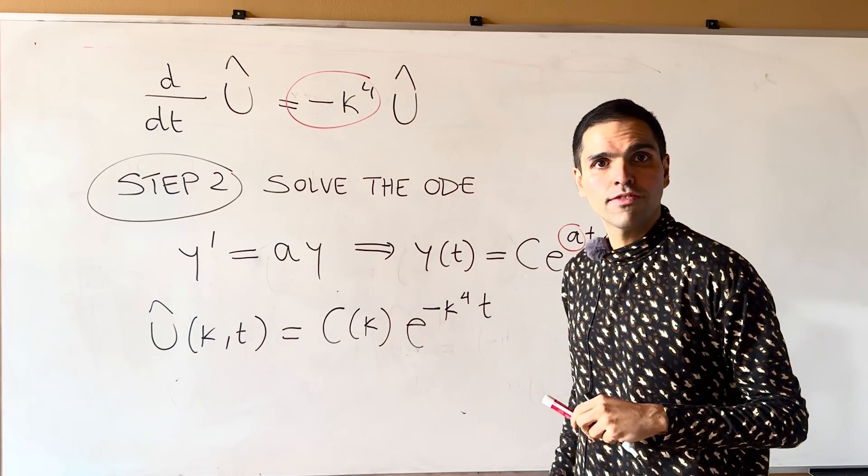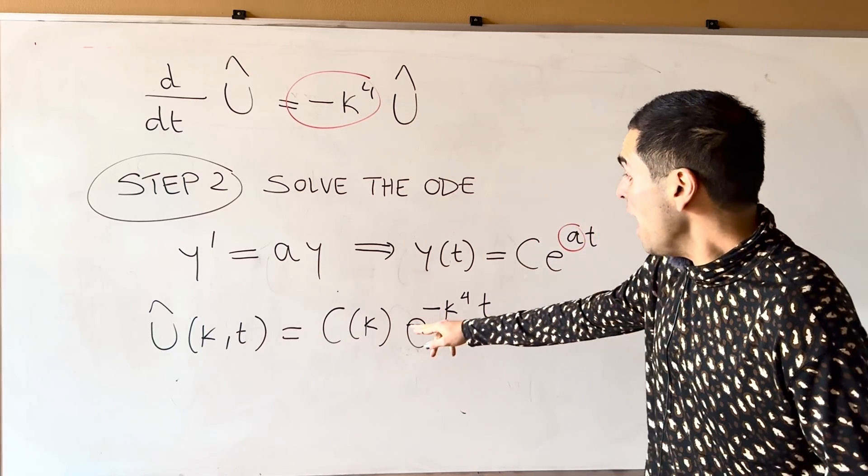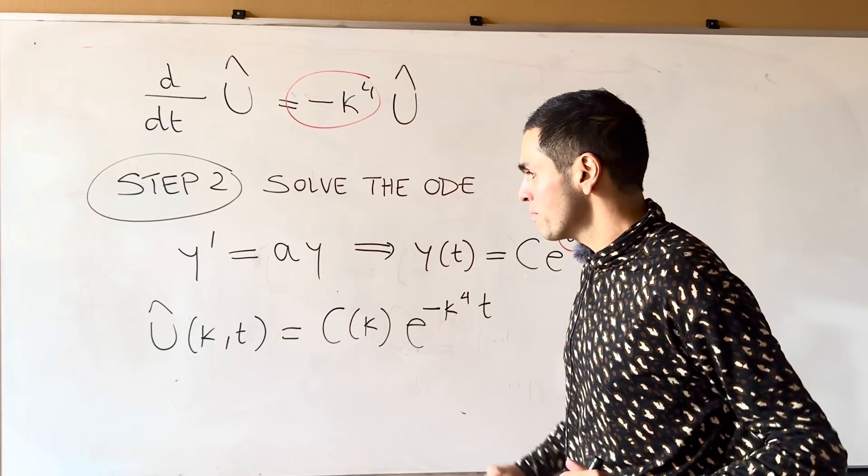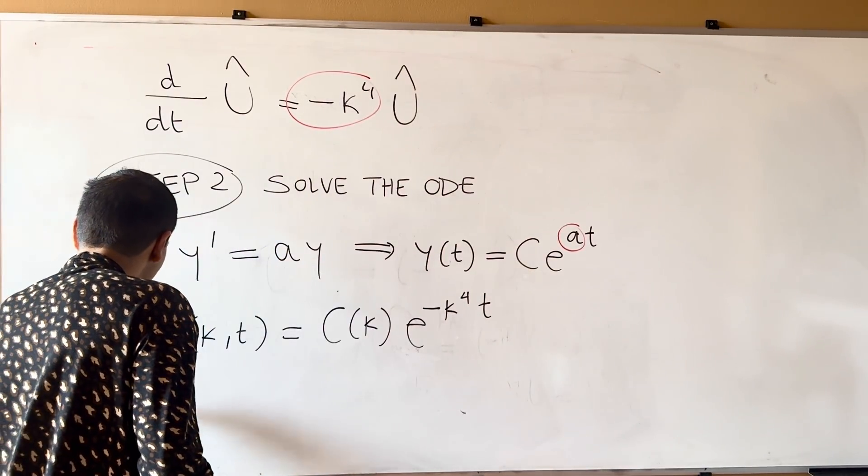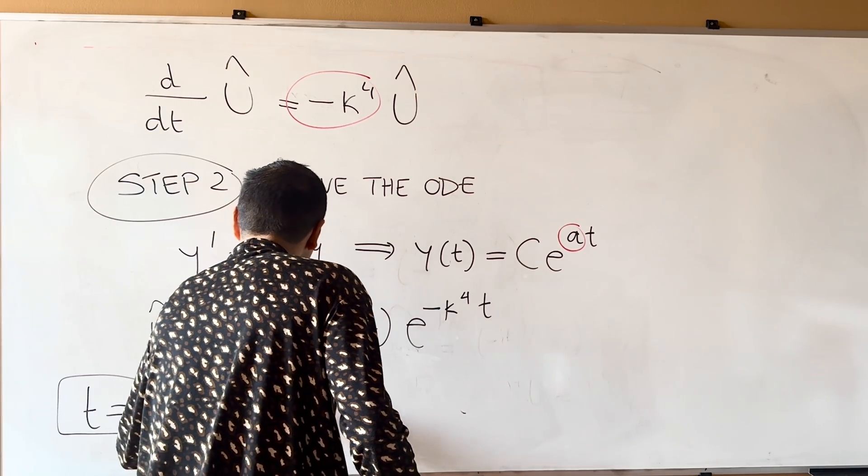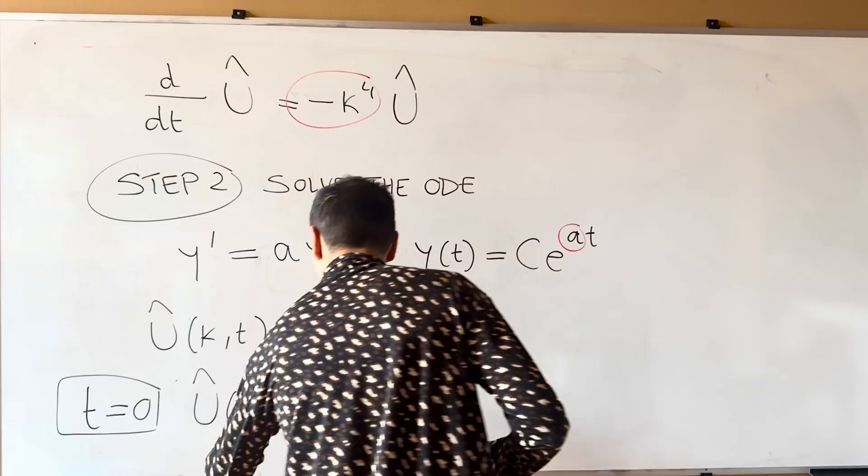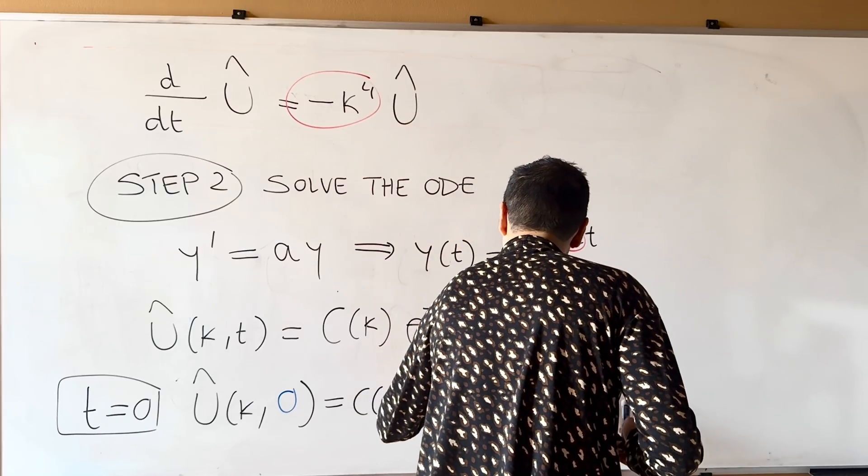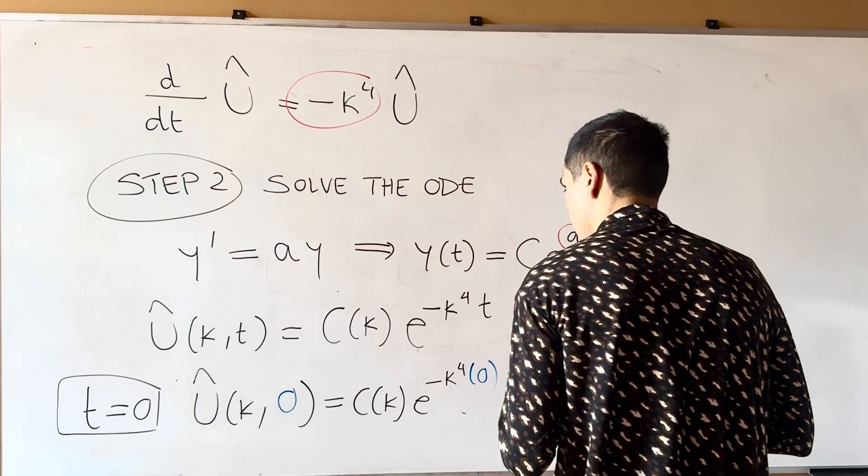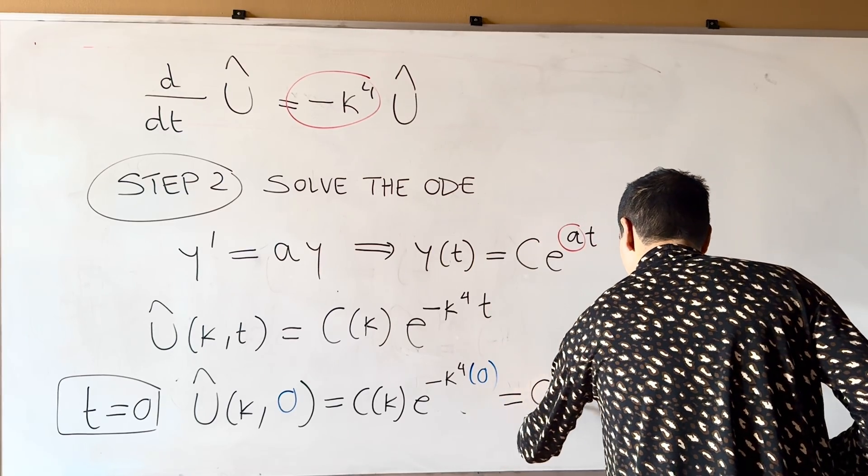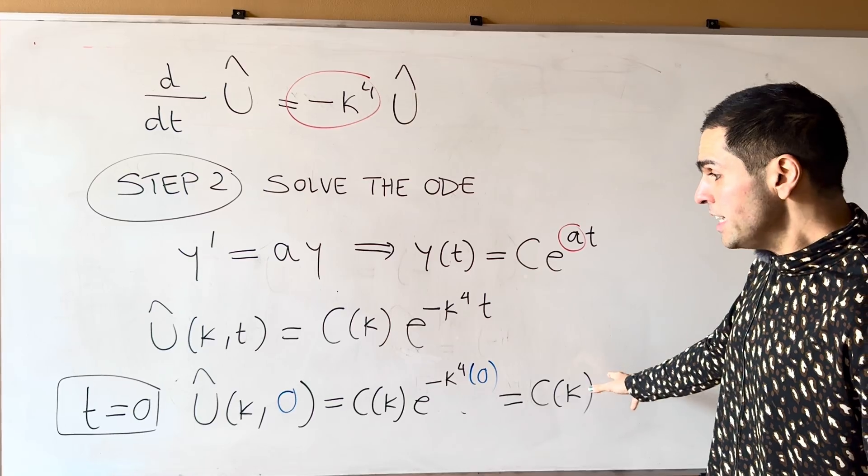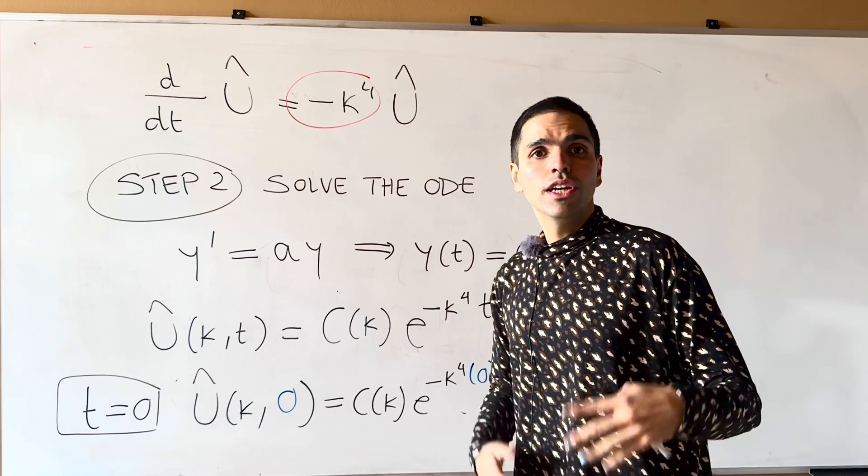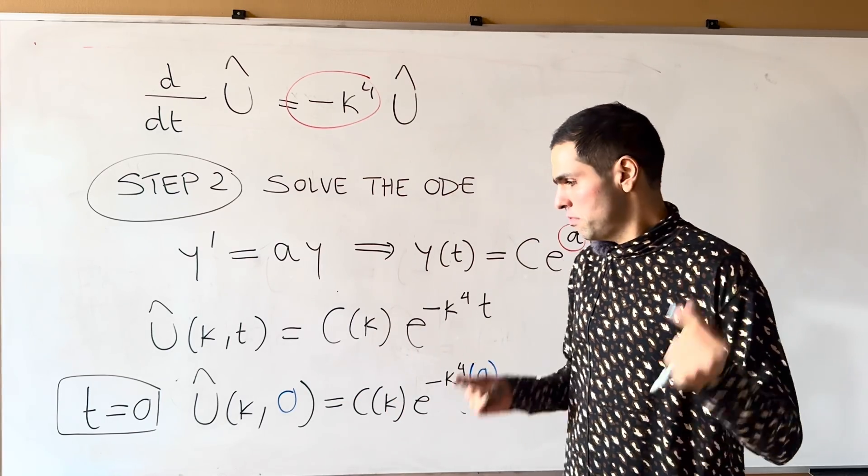And the next thing we want to do, which is the thing we haven't used yet, is the initial condition. So let's plug in T equals zero, and then we get U hat kappa zero equals C kappa, E to the minus kappa to the fourth zero, and that becomes C kappa. And so C is just a Fourier transform of U initially, which is the same as a Fourier transform of the initial condition.